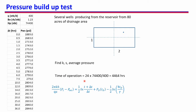The time of operation can be found using the total production and the current flow rate. This average time of production comes out to be 4464 hours. We want to use the pressure buildup test equation, and last time we found the permeability and skin factor, which I will link here.